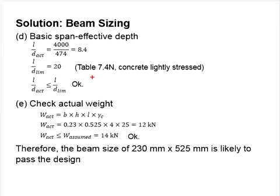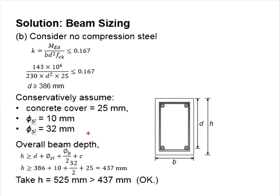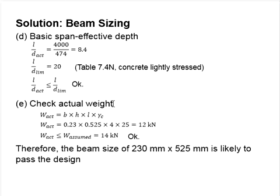In case that your assumed value is less than the actual value, you might need to cross-check again with your size. In this case, the h assumed, h taken, is relatively high compared to the required. The checking may not be that necessary.